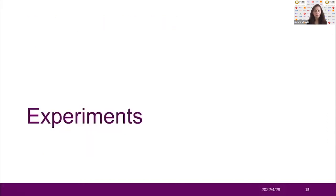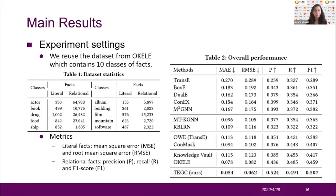The next part is the experiment. We use the dataset from AllClear, which contains 10 classes of facts. For literal facts, we use mean absolute error and root mean square error as the metric. For relational facts, we use precision, recall, and F1 score as the metric.